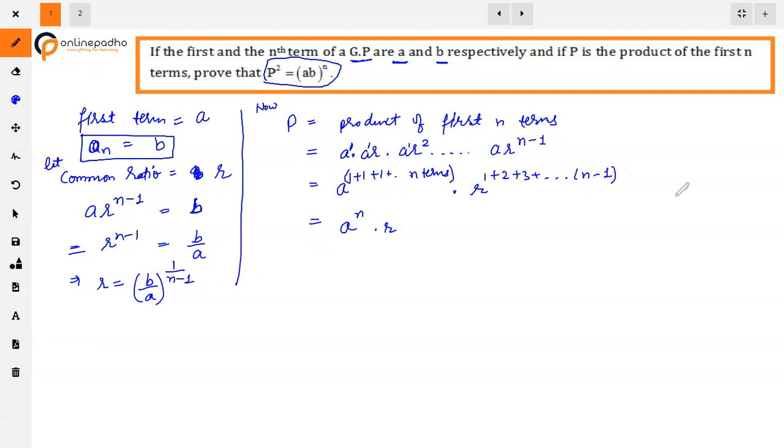For R's power, 1 plus 2 plus 3 up to n minus 1 forms an AP. If you find the sum of this AP, the formula is n by 2 times a plus l, the sum to n terms. You can either apply that or directly put the sum of this series. If we solve this: n minus 1 by 2 times first term 1 plus last term n minus 1, so 1 cancels out to give n times n minus 1 by 2.